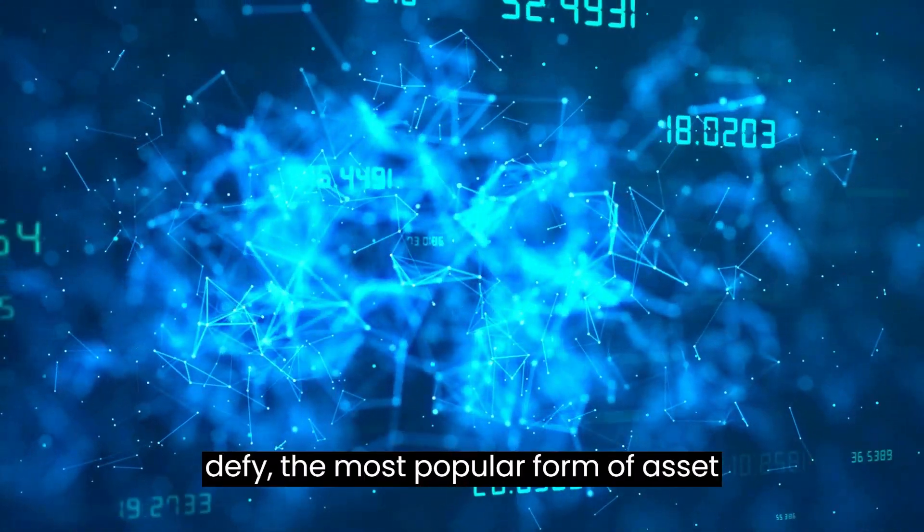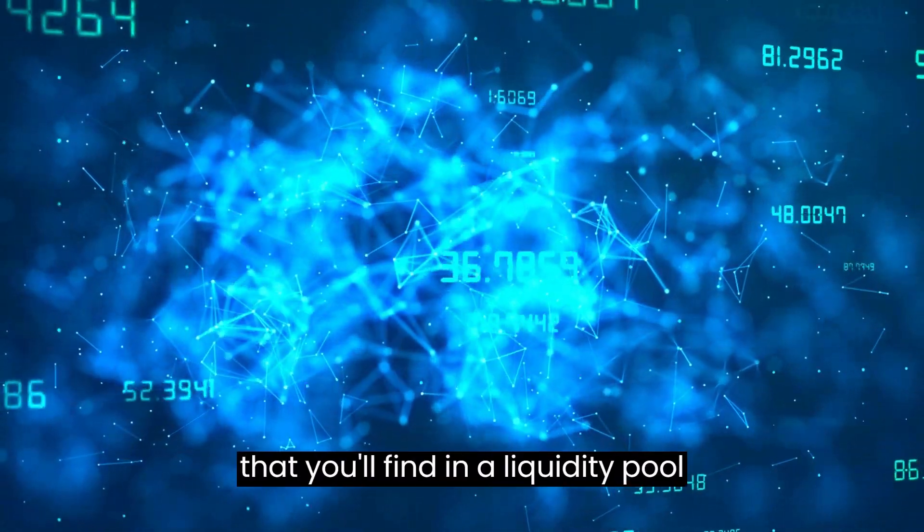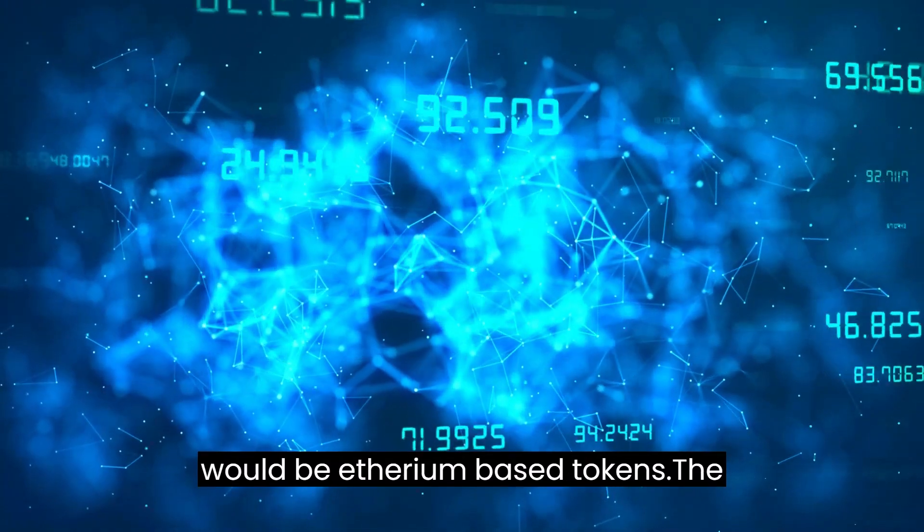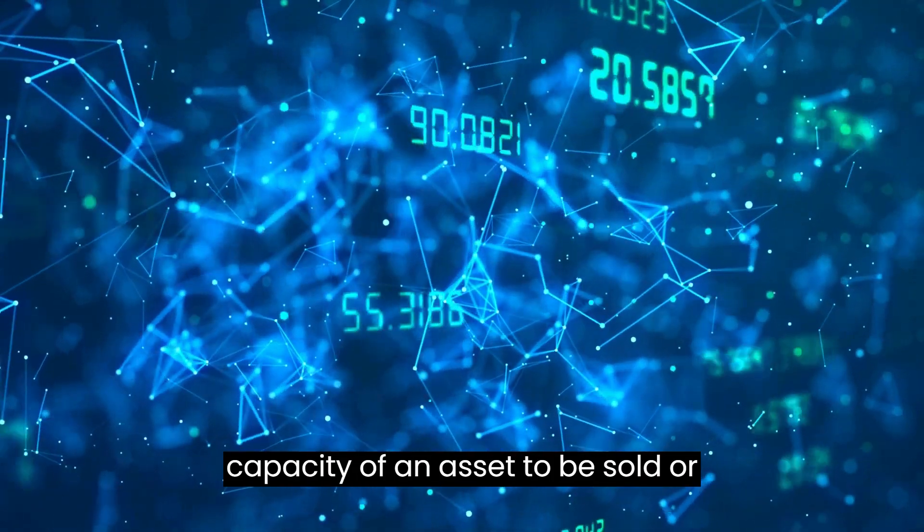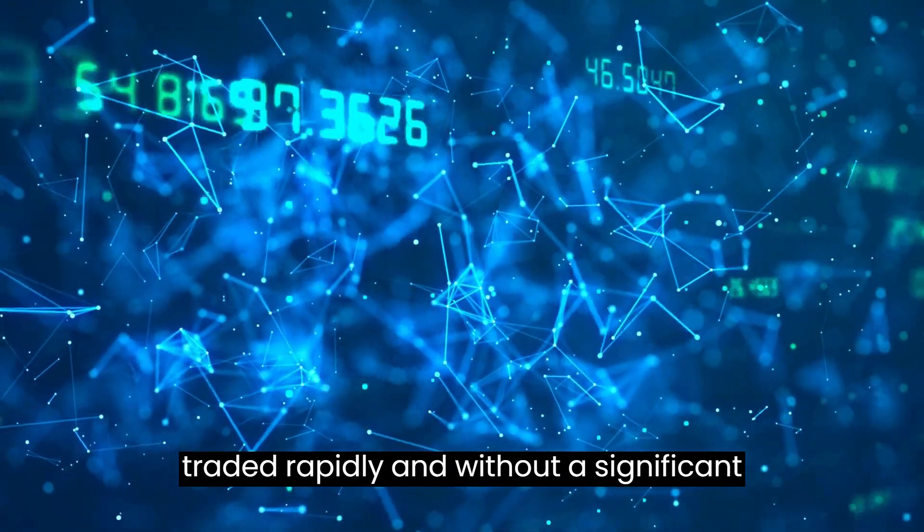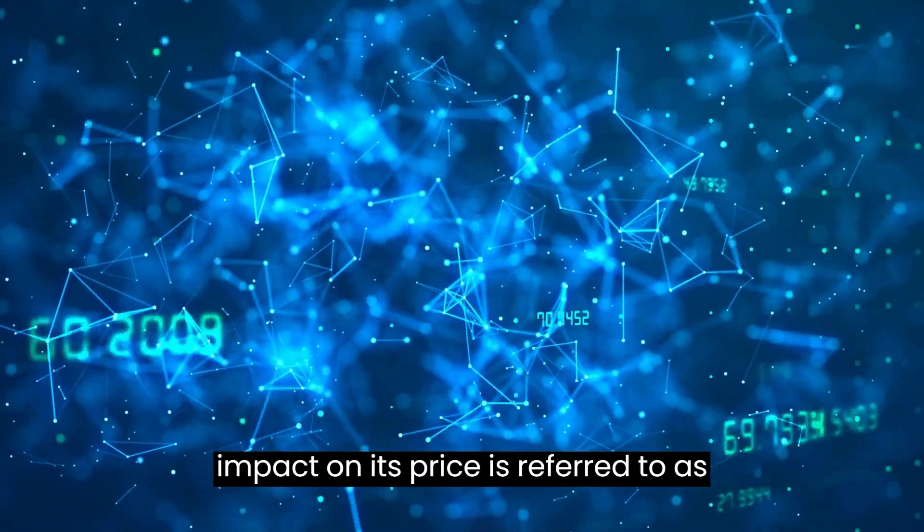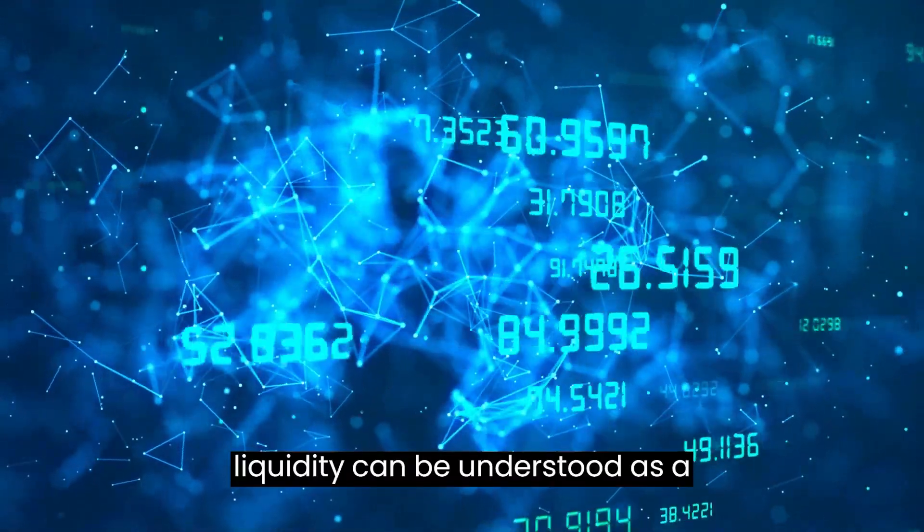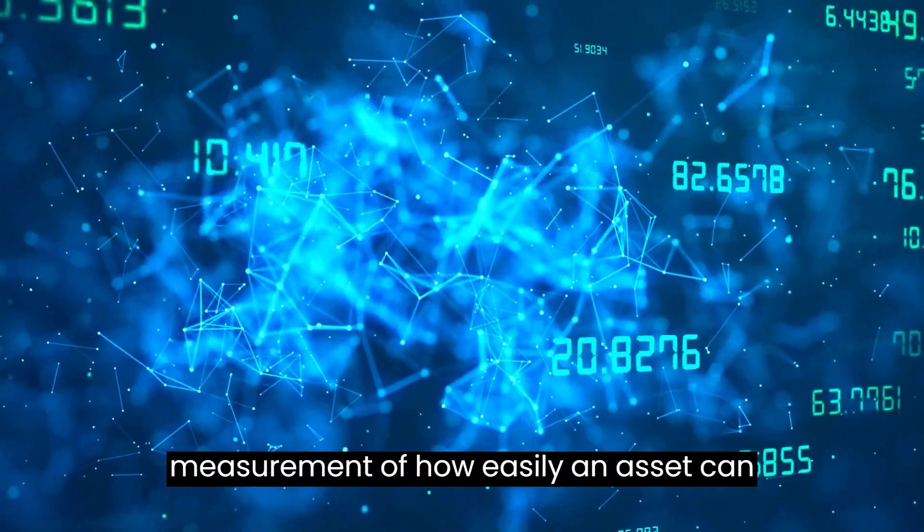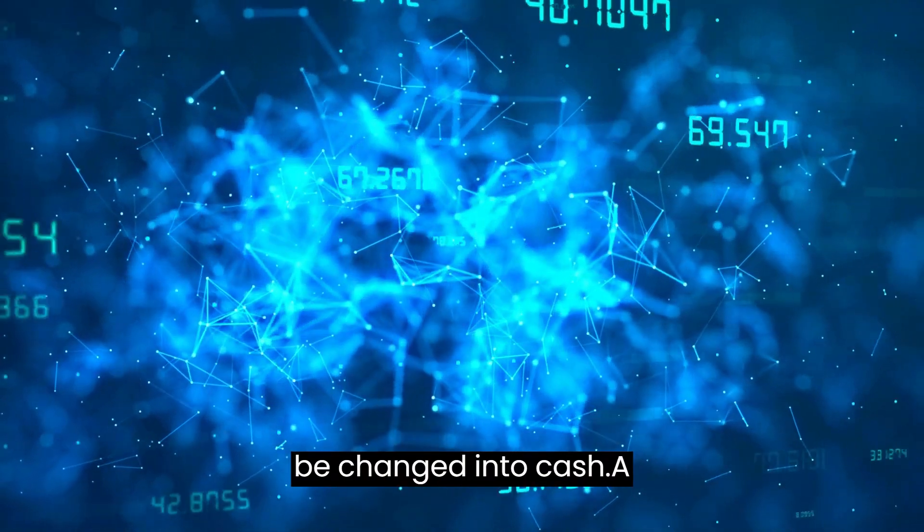In the world of DeFi, the most popular form of asset that you'll find in a liquidity pool would be Ethereum-based tokens. The capacity of an asset to be sold or traded rapidly and without a significant impact on its price is referred to as its liquidity. To put it another way, liquidity can be understood as a measurement of how easily an asset can be changed into cash.